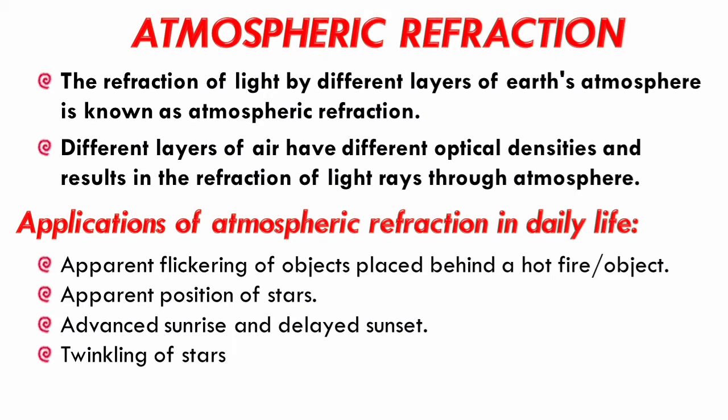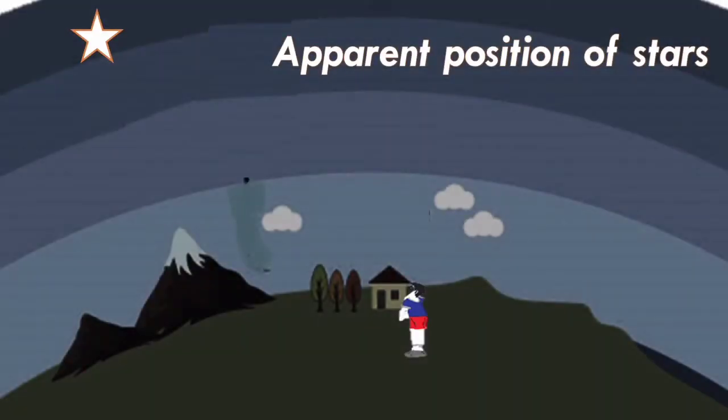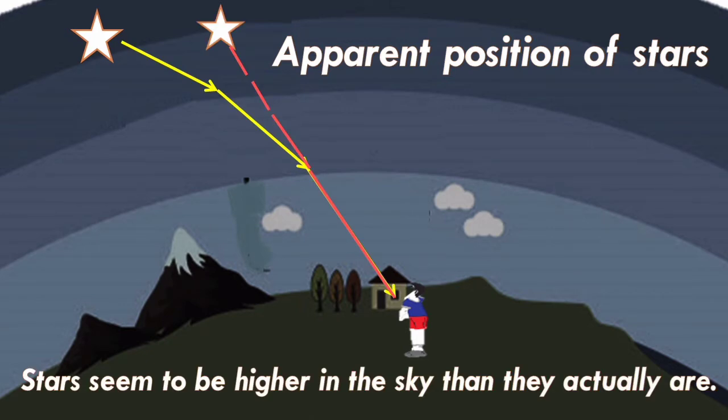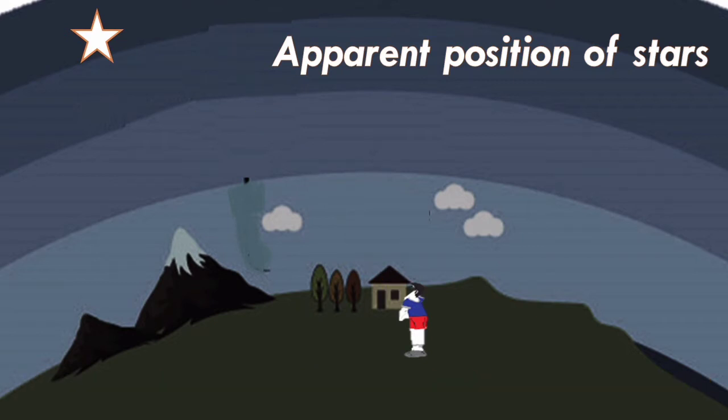Due to atmospheric refraction, the stars seem to be higher in the sky than they actually are. Light from a star is refracted as it leaves space and enters the earth's atmosphere. Air higher up in the sky is rarer but that nearer to earth's surface is denser.